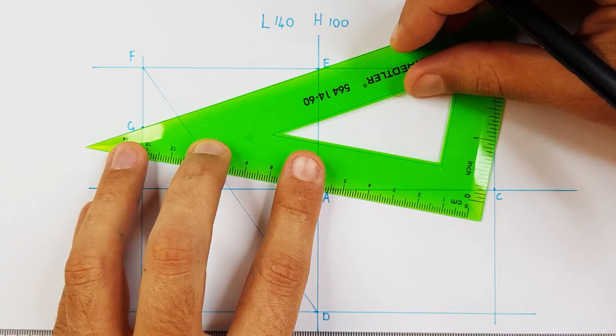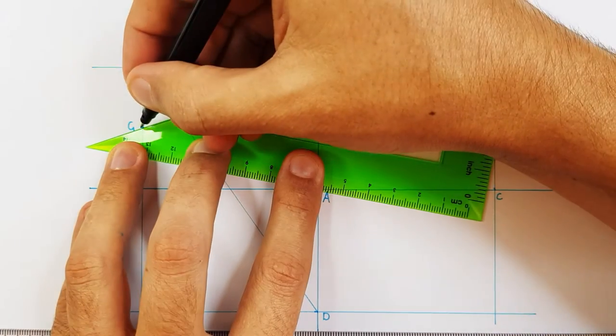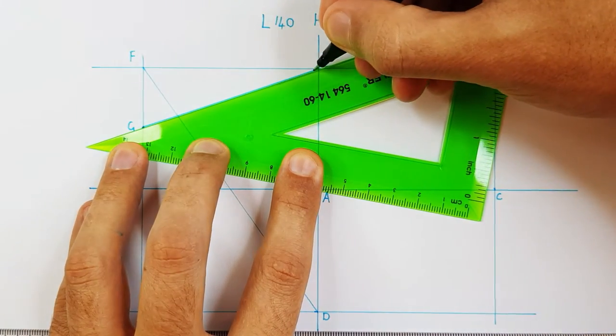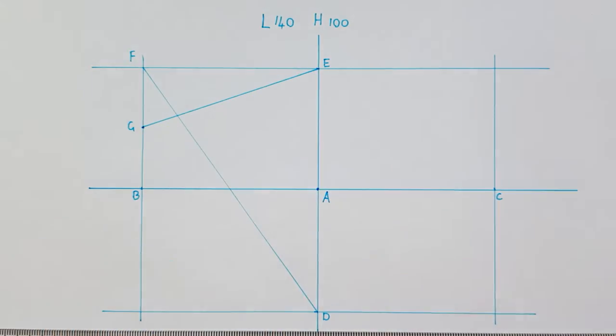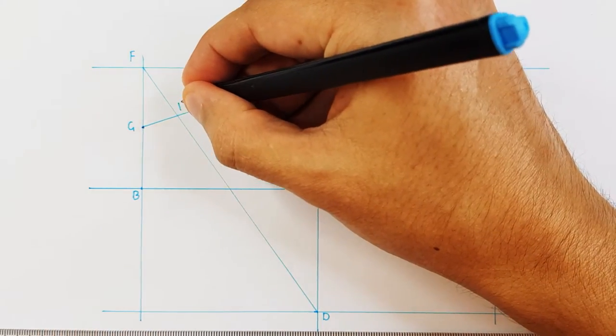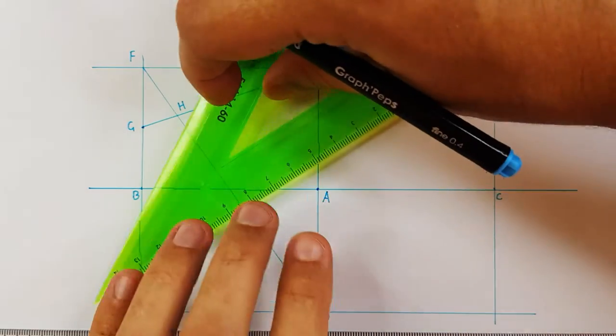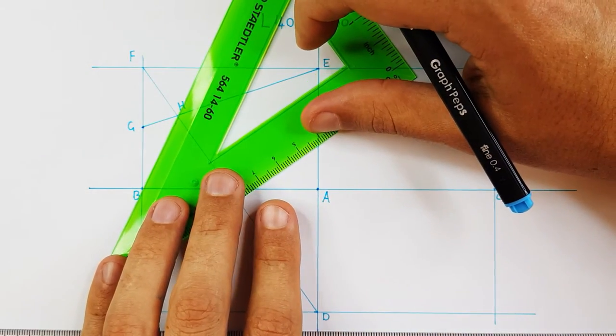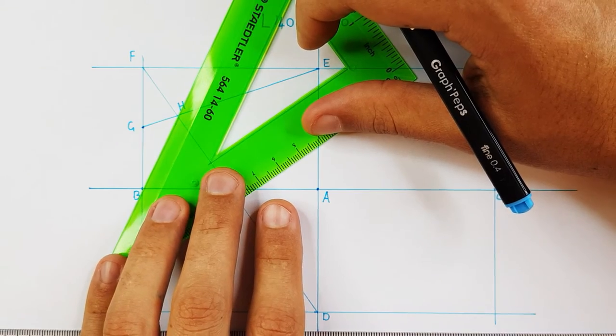Use your ruler then to connect point G and E using a construction line. Where these two construction lines section each other, I can label that as point H. Take your ruler and then join point B and H.